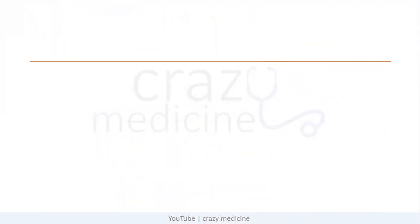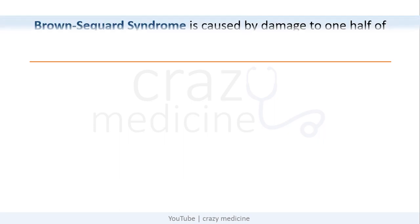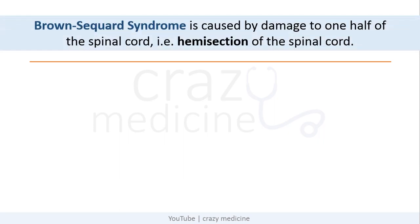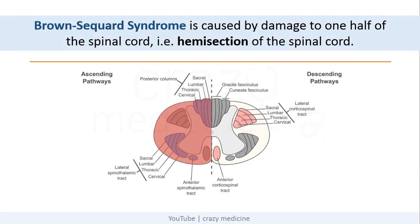First of all, what is Brown Sequard Syndrome? It is caused by damage to one half of the spinal cord, i.e. hemisection of the spinal cord. We will study individual tracts one by one because it is important to know the concept for solving questions, and later we will discuss the concept of involvement of UMN and LMN lesions.